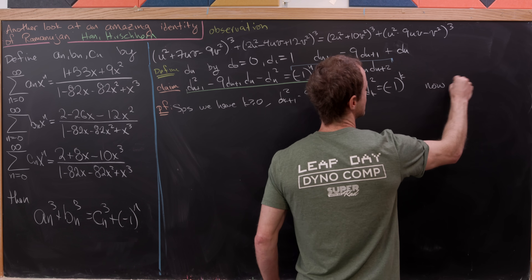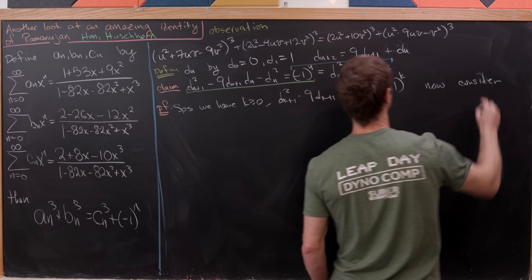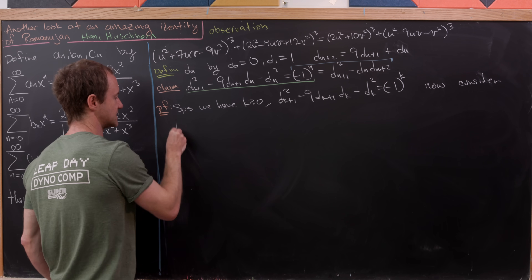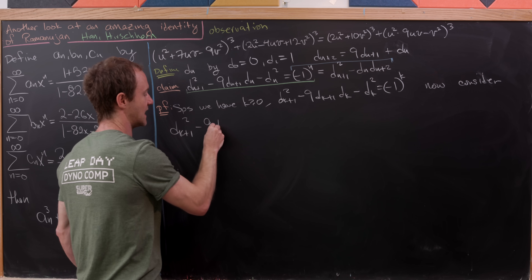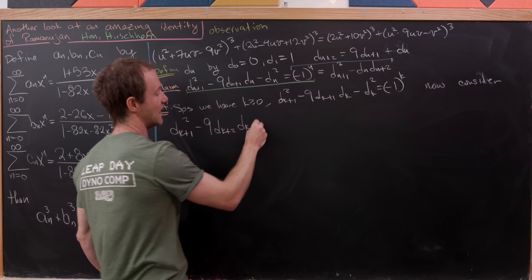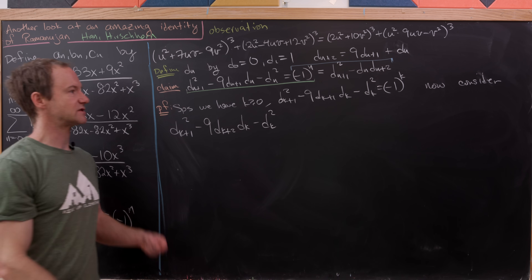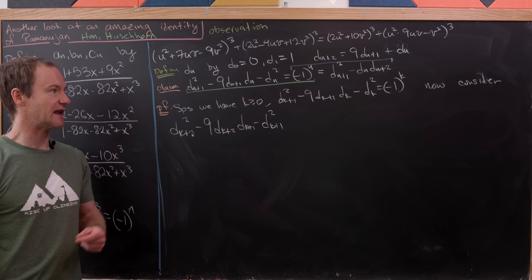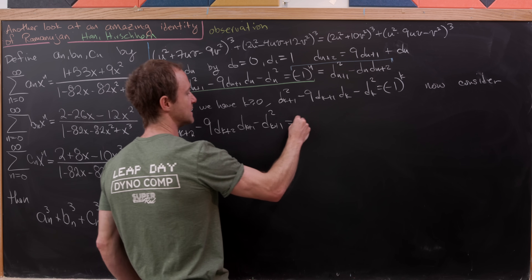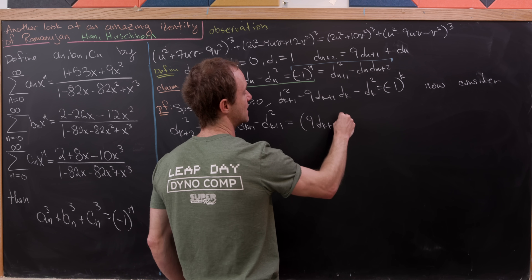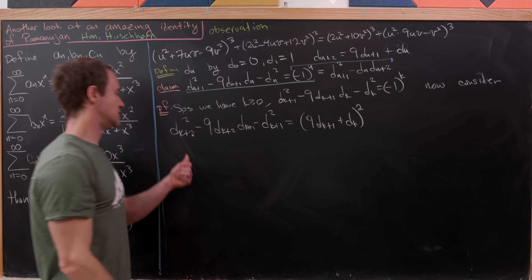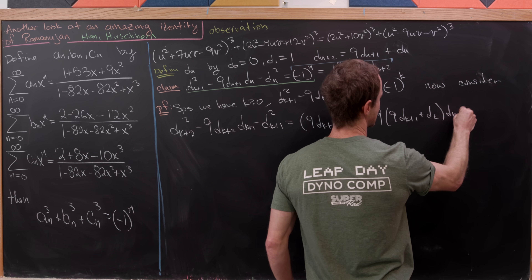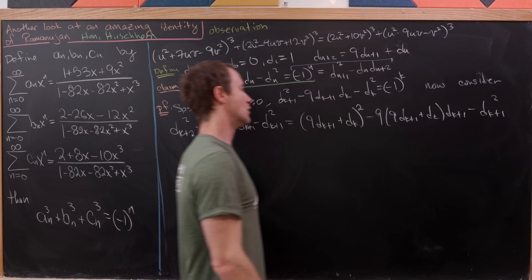Now we'll consider the next case — the left-hand side of our equation with K replaced by K+1. That gives us D(K+2)² − 9·D(K+2)·D(K+1) − D(K+1)². We replace D(K+2) using our recursion, giving us (9·D(K+1) + D(K))² minus 9·(9·D(K+1) + D(K))·D(K+1) minus D(K)².